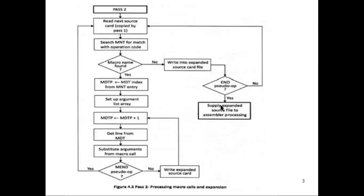Now we move on to the pass two flowchart. The input to pass two is the output from pass one — that is, the copy of the source program. We read each line from the source program copied by pass one and perform a match operation with the operation code in the MNT (macro name table). This checks whether a macro call is occurring. If the operation code matches a macro name in the macro name table, we recognize it as a macro call.